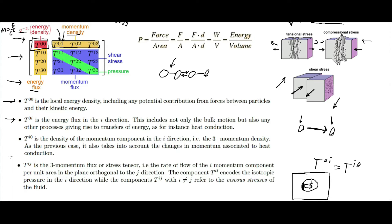T^i0 is the density of the momentum component in the i-direction — the three-momentum density — and it also takes into account the change in momentum associated with heat conduction. If we have a heat source touching one side, there will be a change in momentum moving through the object: the particles on that side will be moving faster and will transfer momentum toward the other direction.